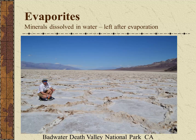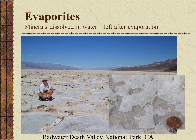Evaporites occur when minerals are dissolved in water, and then the water evaporates, leaving the minerals behind. This image shows me out at Badwater in Death Valley National Park, nearly 280 feet below sea level — the floor of the former inland sea known as Lake Manly. Since this lake had no outlet to the ocean, it became very salty, and when it evaporated, the salt was left behind. On close inspection, we can see the cubic crystals characteristic of the mineral halite.